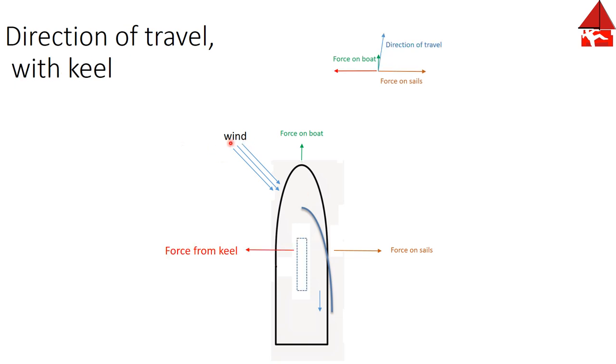Here we have the same diagram with wind coming in from the port side about 45 degrees. We still have the wind being redirected aft and the force pushing the boat to leeward, but this time we've added the keel sticking down under the boat. As the boat tries to slide to leeward, the density of the water creates a high pressure against the keel and prevents the boat from sliding to leeward as much.